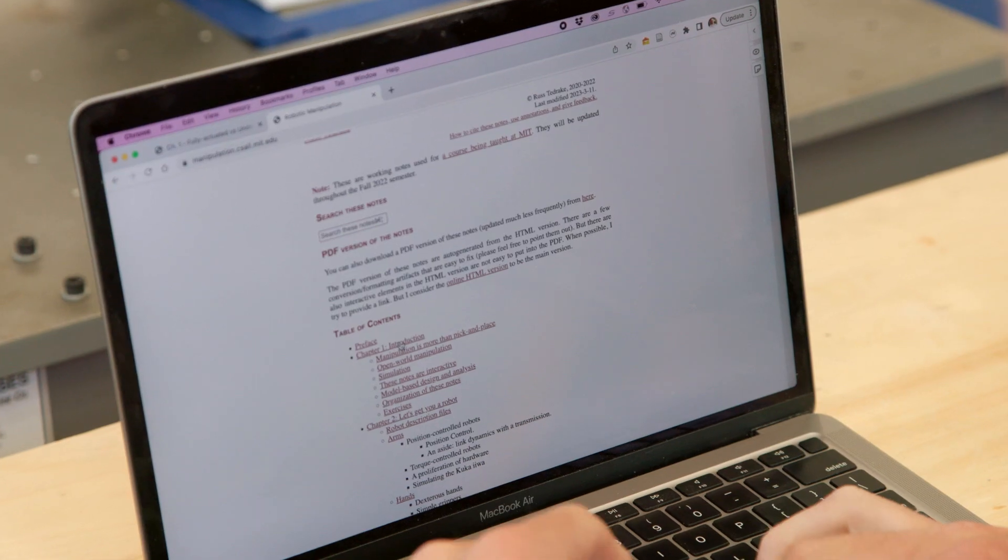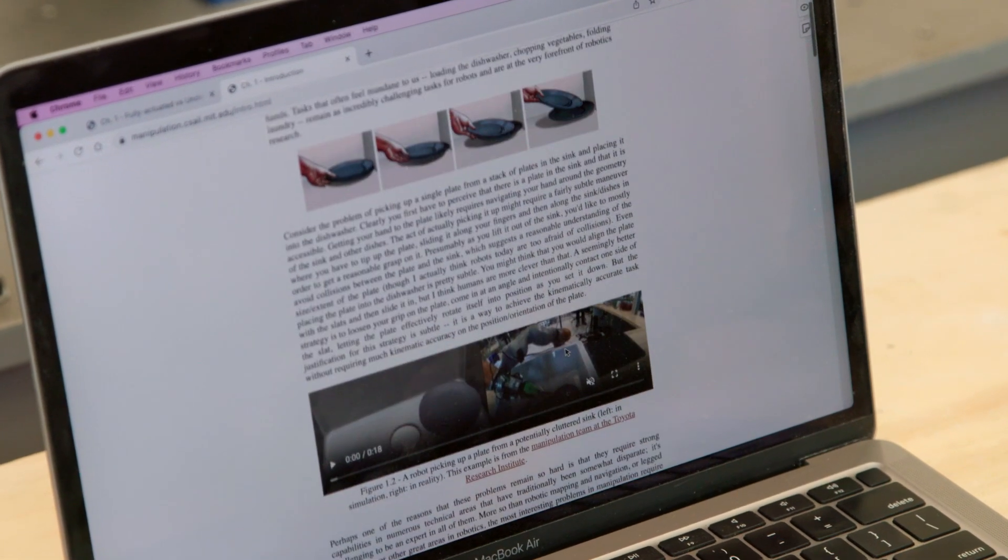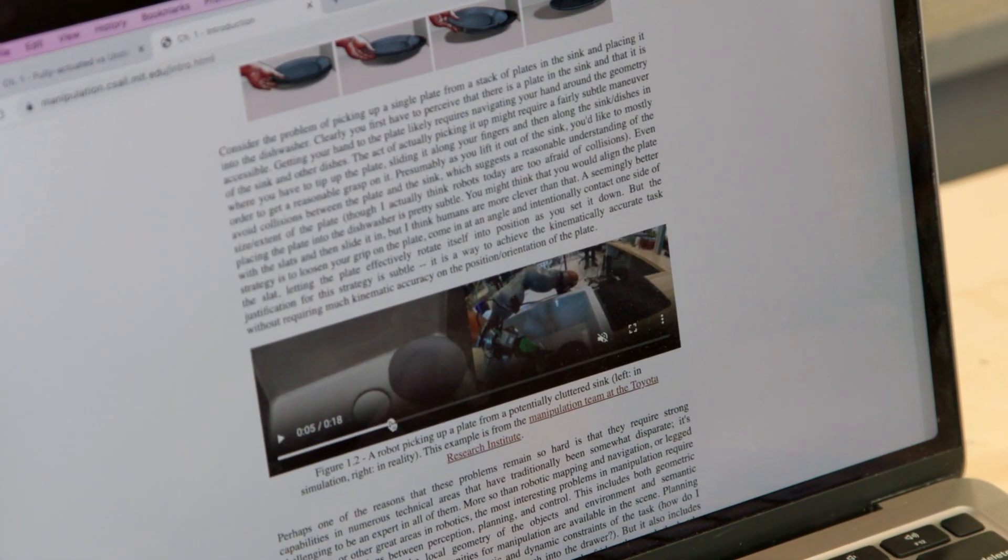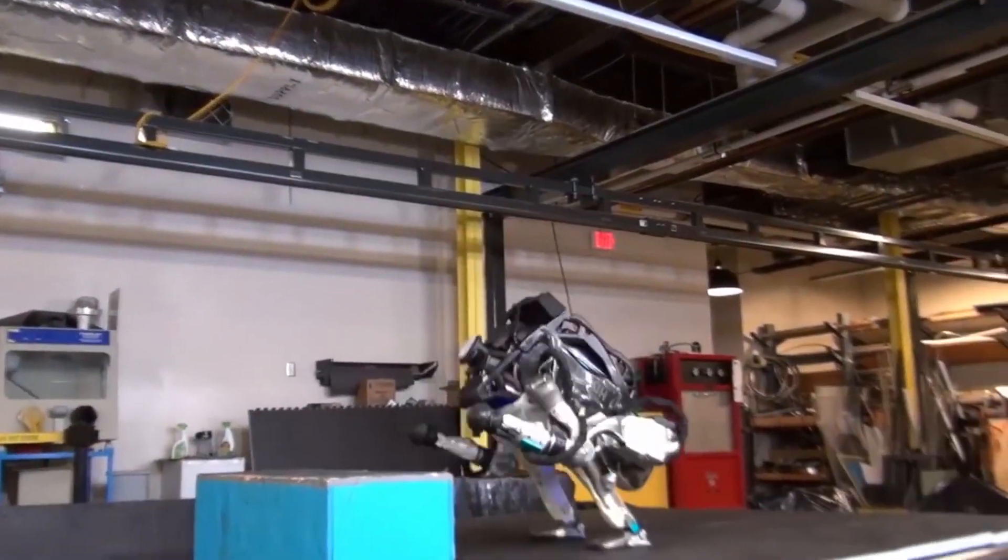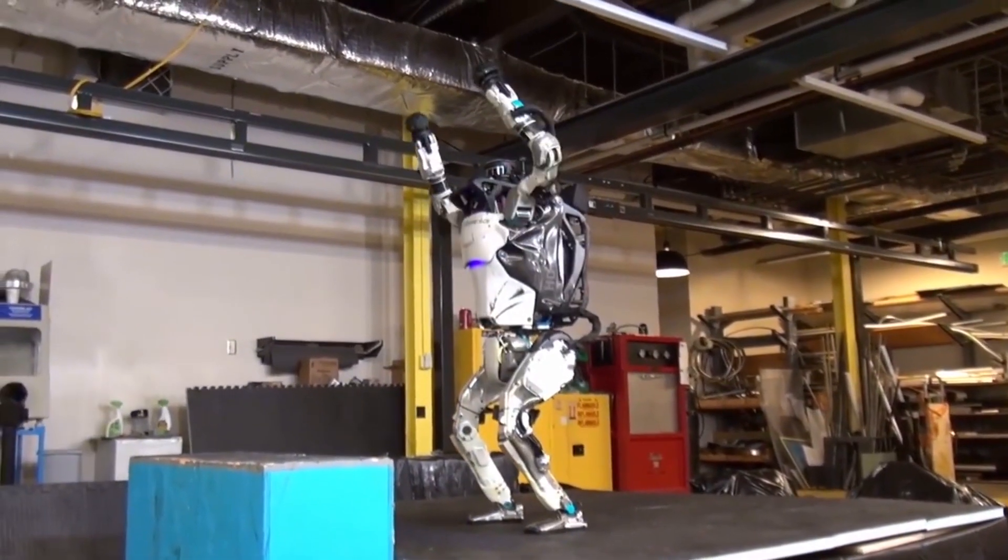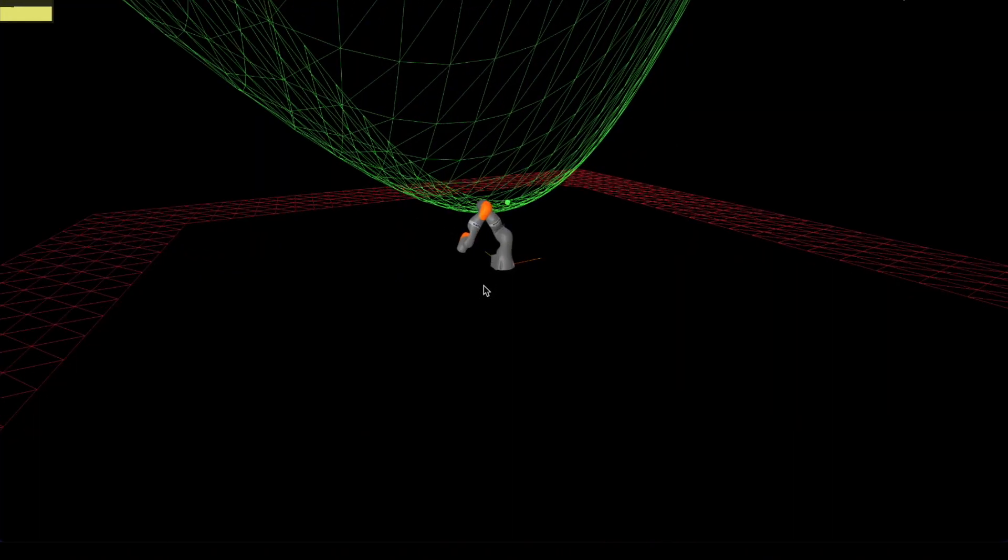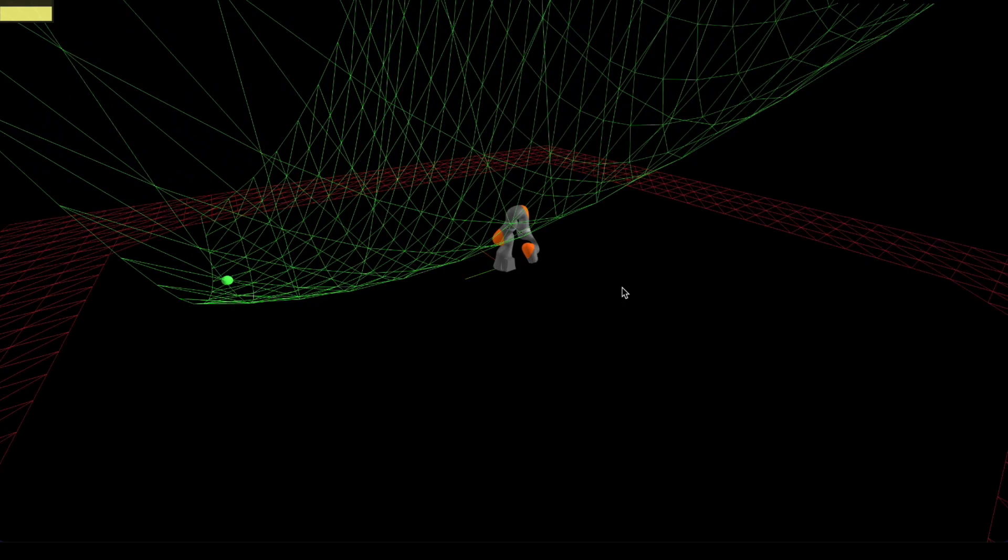I try to innovate a lot in the technology of how I teach. My course notes are not a static PDF. They are a website that has interactive content. Not only robot videos, but also animations that you can slide back through, change parameters, see how the physics evolves.